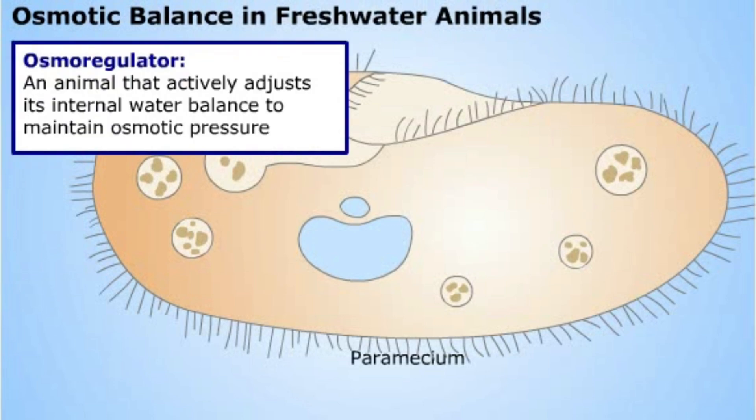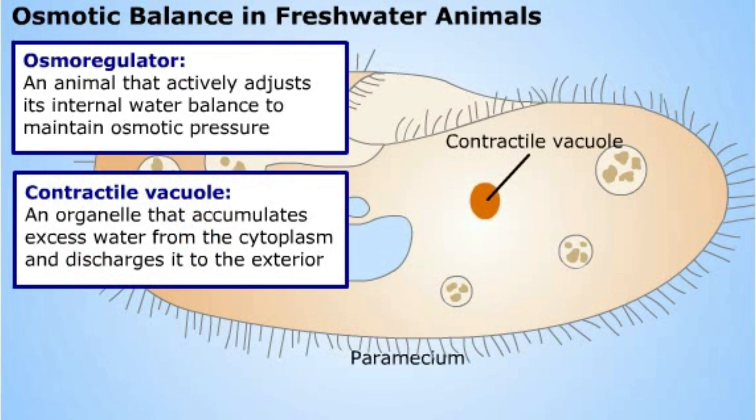Animals that actively adjust their internal water balance to maintain osmotic pressure are called osmoregulators. Freshwater protists, like a paramecium, are osmoregulators. They expel excess water by means of a contractile vacuole.